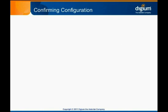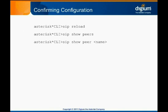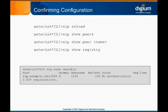Once you've configured your trunk, you will of course need to issue the sip reload command on the Asterisk CLI to apply your changes. You may also run sip show peers to see the status of all peers, or sip show peer followed by the peer name to see detailed information about just one peer. sip show registry will show our outbound registrations and their status. You can see here the status is currently registered and not rejected due to authentication mismatch.